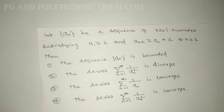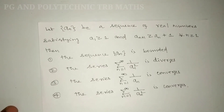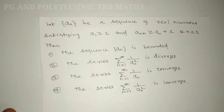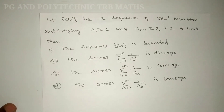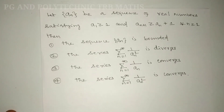Let {a_n} be a sequence of real numbers satisfying a₁ ≥ 1 and a_{n+1} ≥ a_n + 1 for all n ≥ 1. Then: Option A — the sequence {a_n} is bounded. Option B — the series Σ(1/a_n²) from n=1 to infinity diverges. Option C — the series Σ(1/a_n) from n=1 to infinity converges. Option D — the series Σ(1/a_n²) from n=1 to infinity converges.